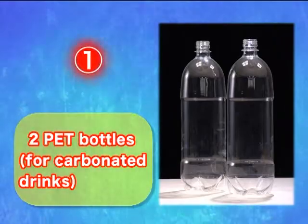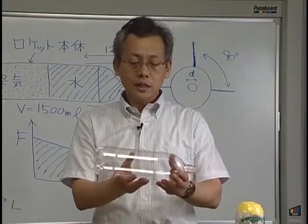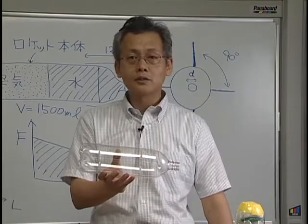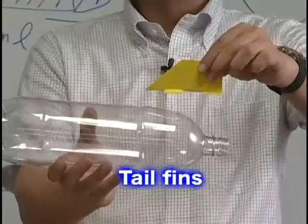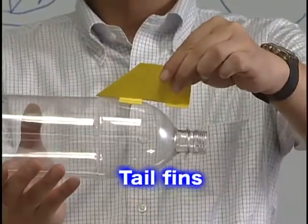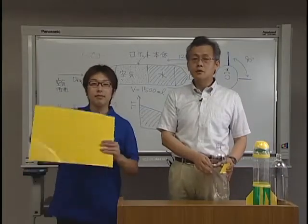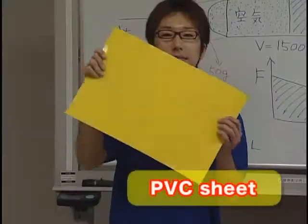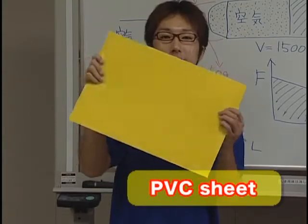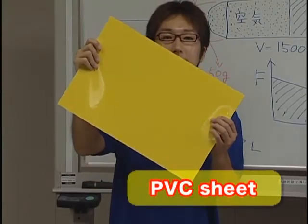We now have our materials for the rocket body, which will generate the thrust for the water rocket. Next we need tail fins. These will allow the rocket to achieve high, stable flight. For the fins we will use moderately hard PVC sheets. You can find them at your local do-it-yourself outlet.